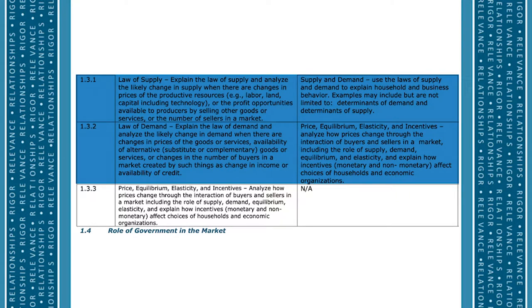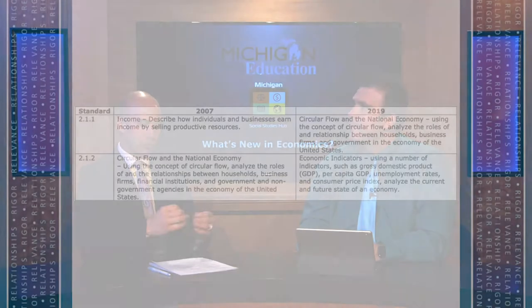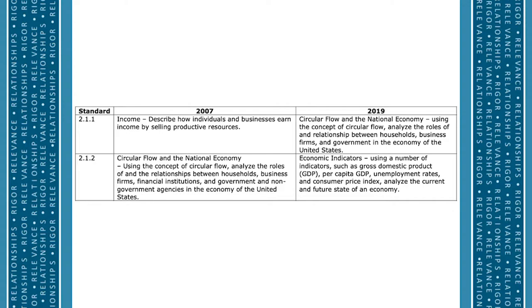When we get into consolidation, we had standard 1.3.1 which was the law of supply, and then one that followed it which was the law of demand. So it was very simple to combine both into the new 1.3.1 where it's supply and demand together. And economic indicators — we had all the basic economic indicators in a different standard. Now in 2.1.2, students use GDP, GDP per capita, unemployment rates, and inflation — all consolidated into one standard. They're not just reporting on those indicators; they're synthesizing and bringing things together to judge where the economy is and how it's doing.